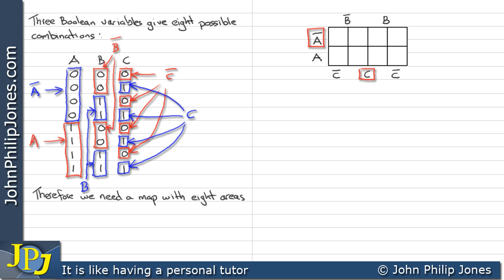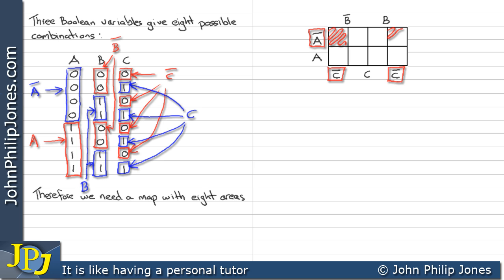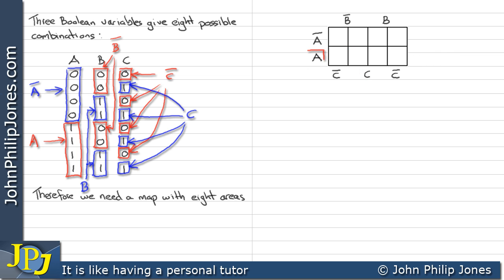If we take not A together with not C we have these 2 squares, known as not A and C. Taking not A with not C, we can see they are split, representing not A and not C. Then here we have not C, and those 2 squares represent A and C. Taking A with not C, this square and this square here both represent A and not C.